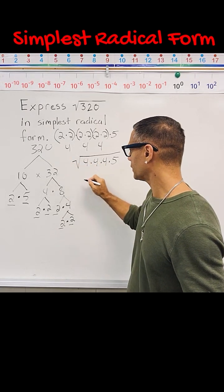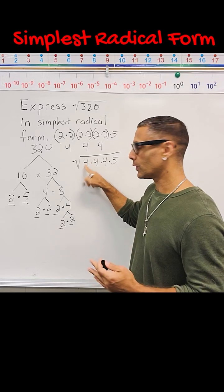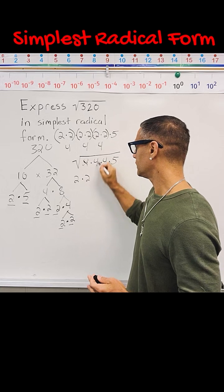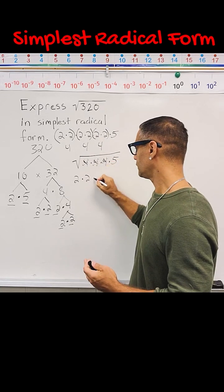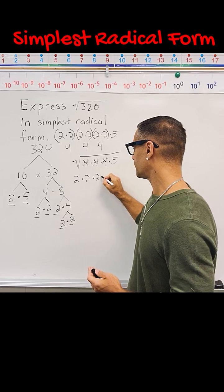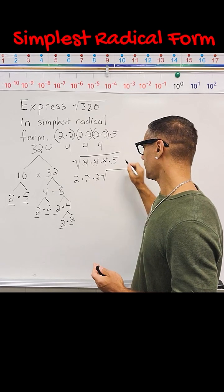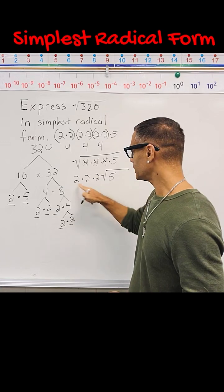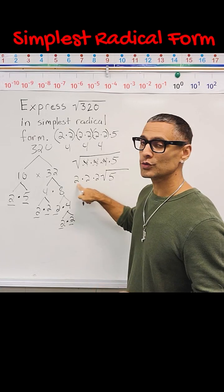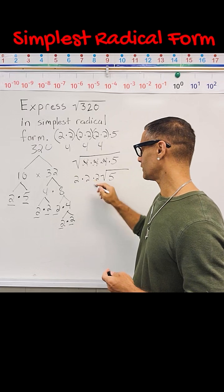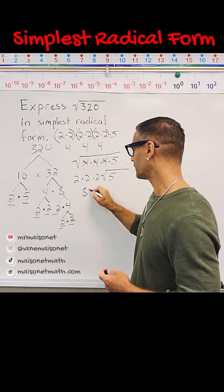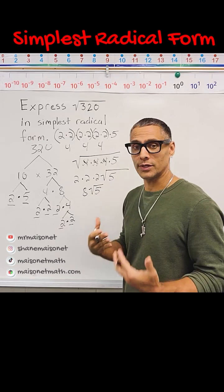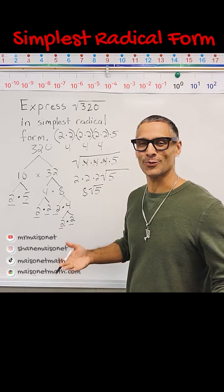These three factors are all perfect squares, so they get to leave the radical to the outside. We take the square root of 4, which is 2; the square root of this 4 is 2; and the square root of 4, once again, is 2. Those go on the outside of our square root sign. The 5 has to stay on the inside because it is not a perfect square. Then we take these 2s and multiply: 2 times 2 is 4, and 4 times 2 is 8. So we end up with the final answer of 8 times the square root of 5, which is the square root of 320 expressed in simplest radical form.